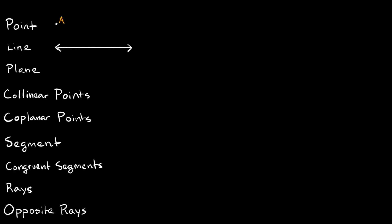Now, lines are just a straight line and they extend in both directions forever. There are normally two points on them, because you need two points to define a line. You can label these as like A and B. So if you were asked to name this line right here, there are a few different ways we can do it. You can label it with just a single letter — we could put something like a T right here, so then we could say that this is line T.